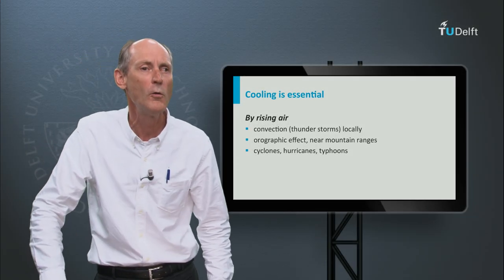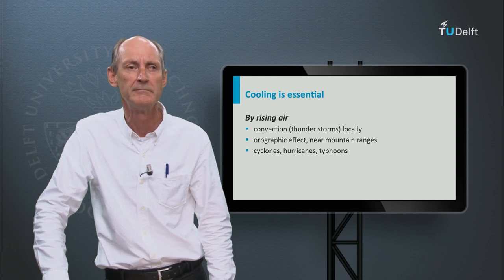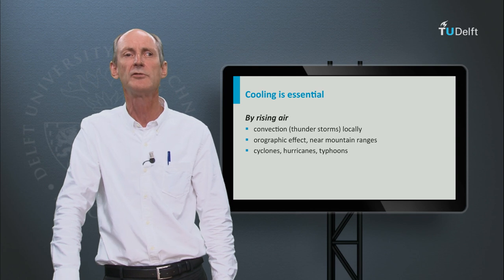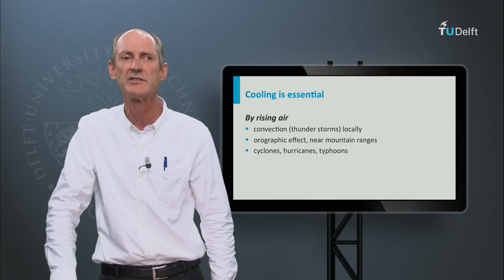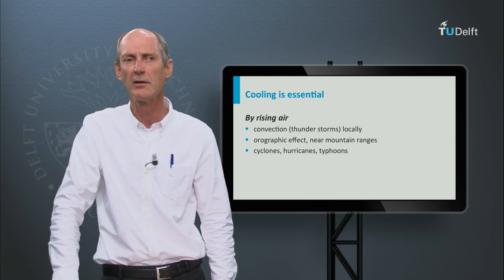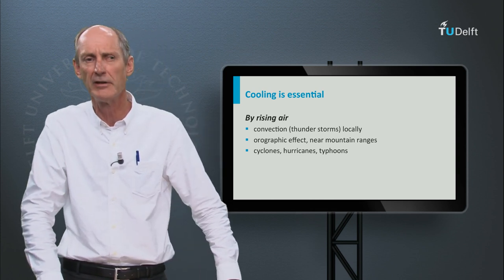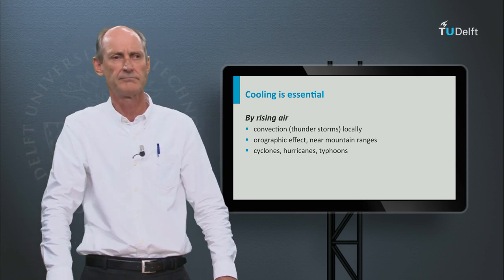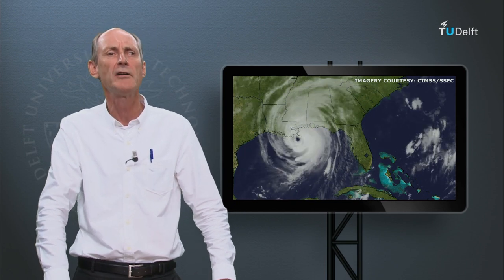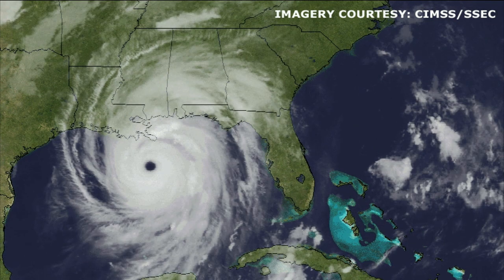Do you know what the difference is between them? Well, there is no difference. It is just that their names are linked to the different oceans that generate them. The Indian Ocean has cyclones, the Pacific has typhoons, and the Atlantic has hurricanes. Here you see a movie of hurricane Katrina, which caused havoc in New Orleans.